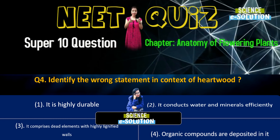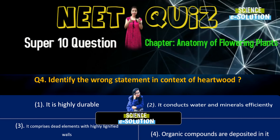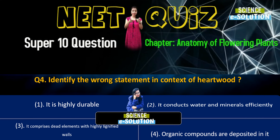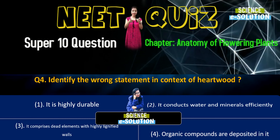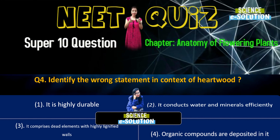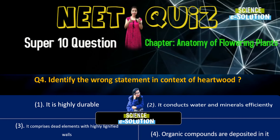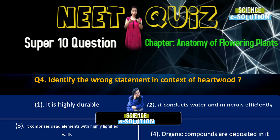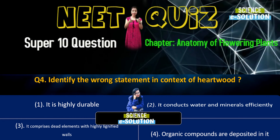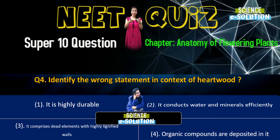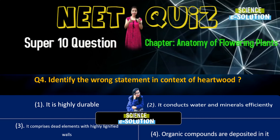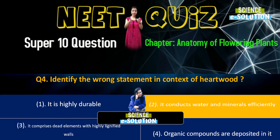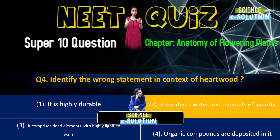Question number one: Cortex is the region found between — epidermis and stele, pericycle and endodermis, endodermis and pith, or endodermis and vascular bundle? Tili jo hai woh central part ko kaha jata hai. So the cortex is the region which is found between epidermis and stele. Option number one will be the correct answer.